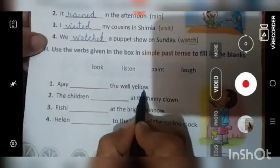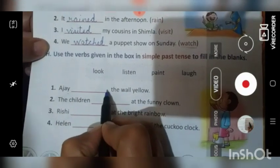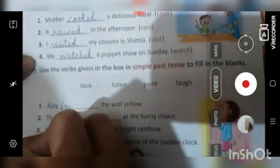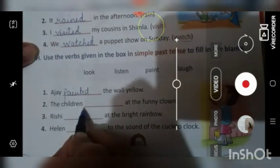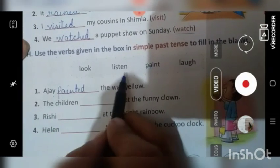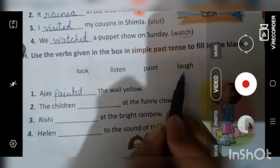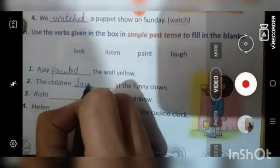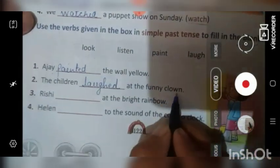Ajay dash the wall yellow. Toh wall ko hum kya kar sakte hai? Looked. Lekin hi haa peh paint hai. Ajay painted the wall yellow. Ajay ne wall ko paint kiya tha. Kis color mein yellow? The children dash at the funny clown. Looked bhi ho sakta hai. Right? Listened. No. Paint toh humara ho gya. Clown ko dekh ke hum kya karte hai? We generally laughed. The children laughed. Dekho ye laugh ki spelling aur humnne aage lagaya ED. Bacche clown ko dekh kar hase thay.